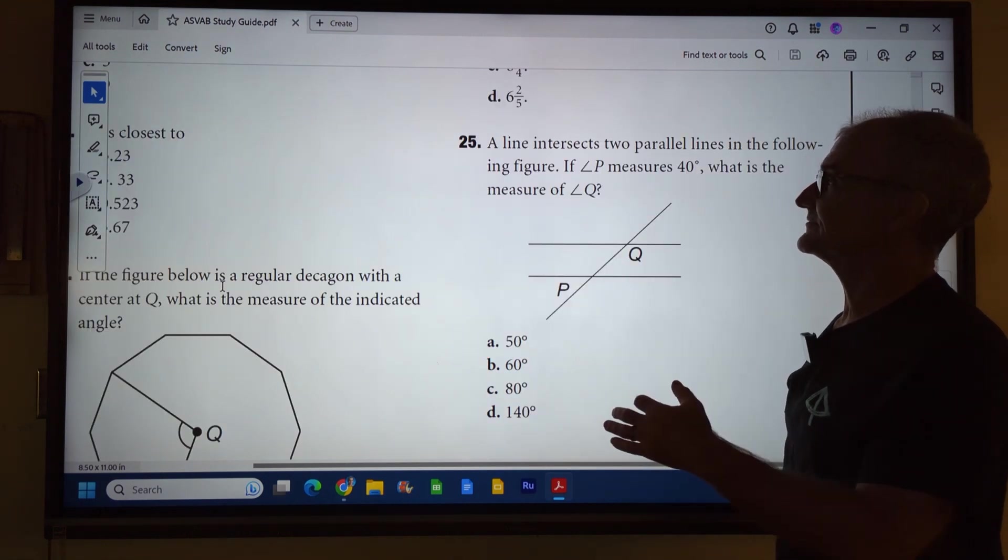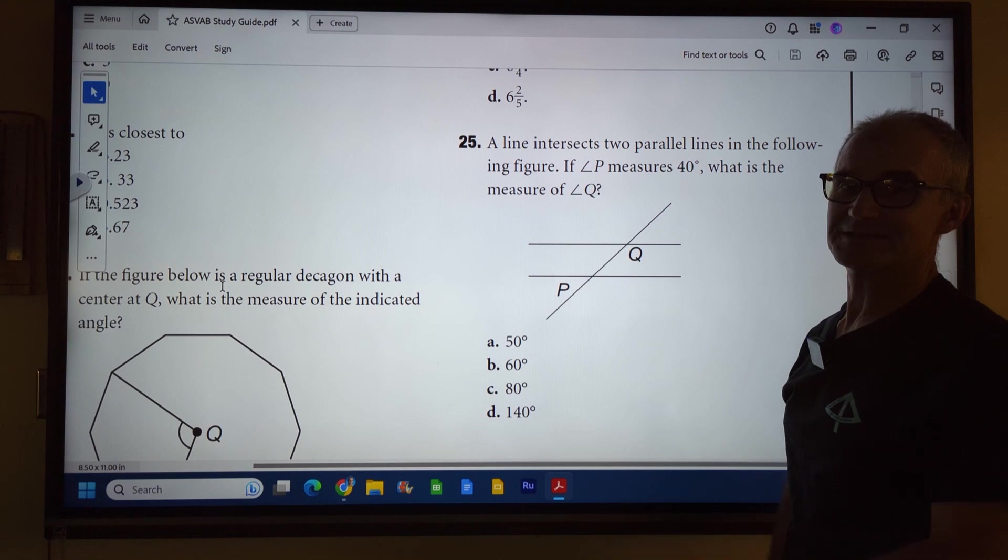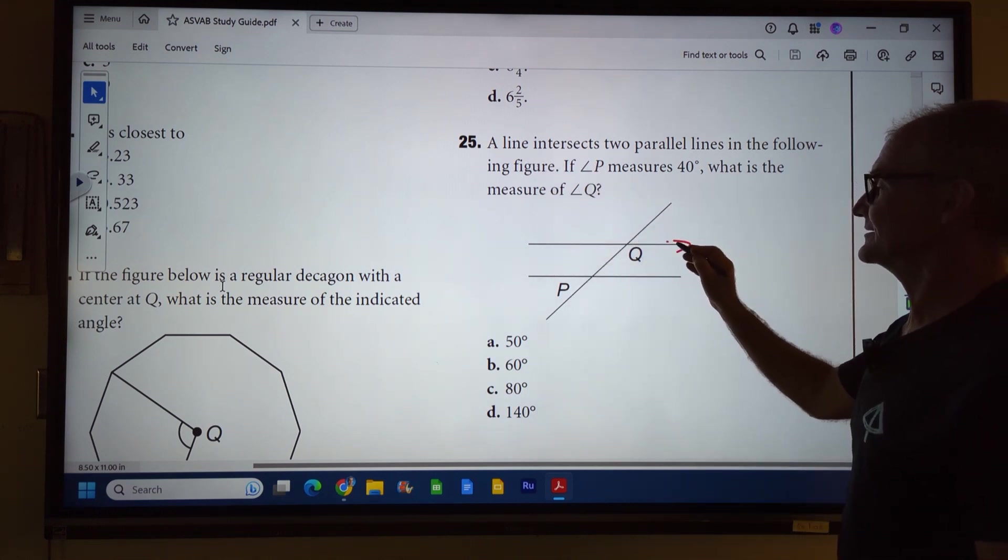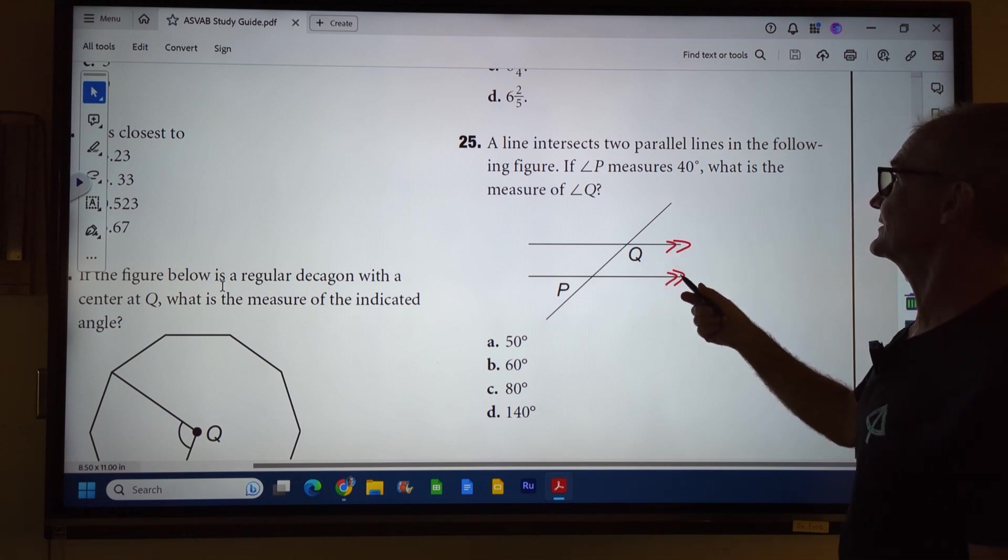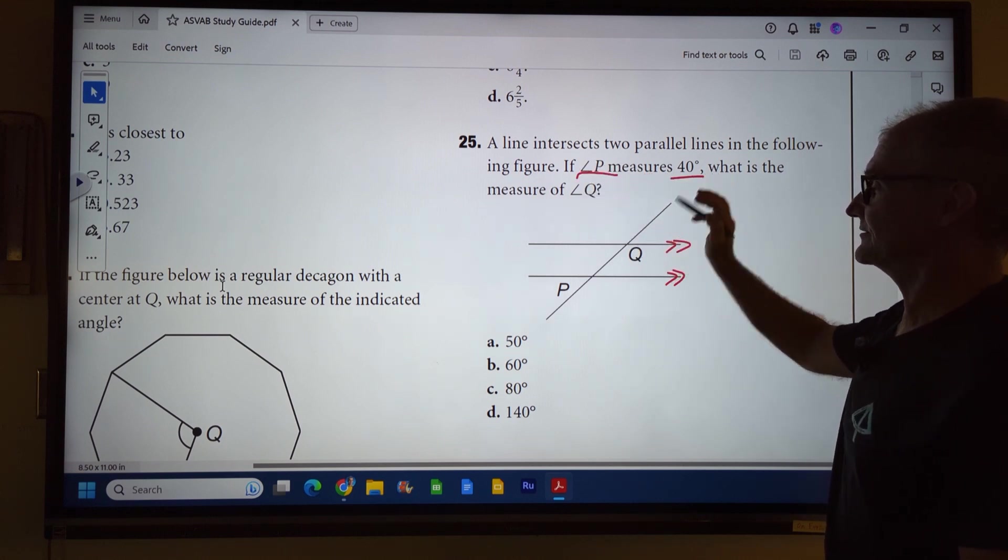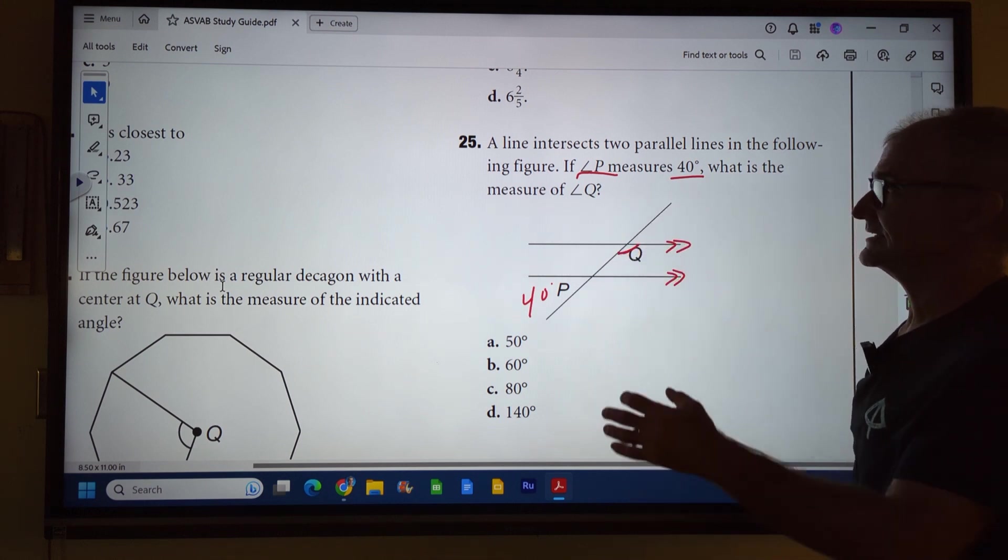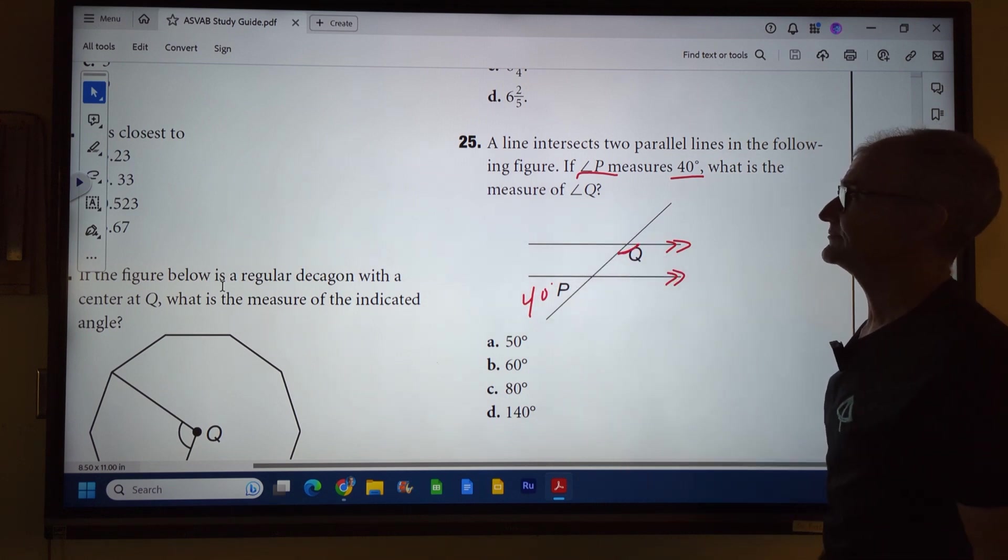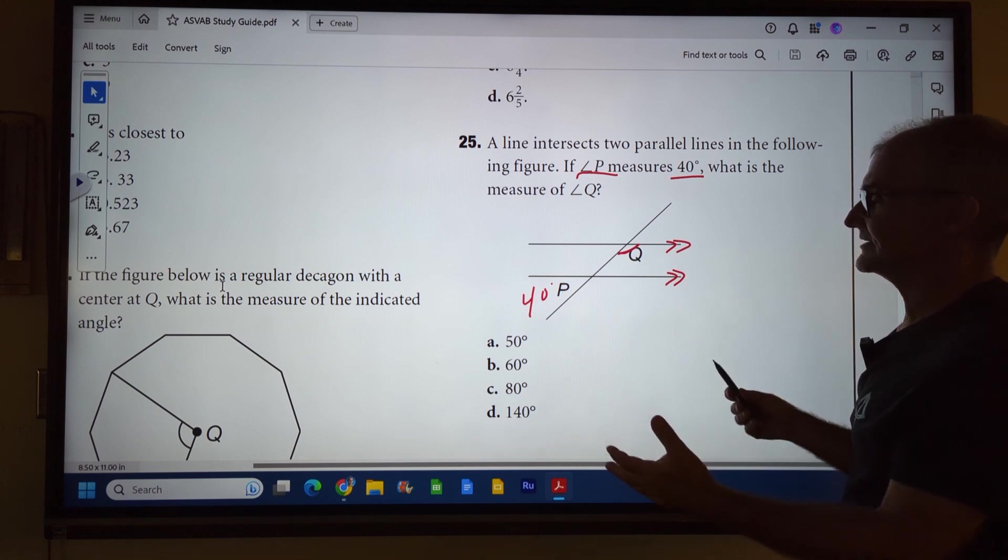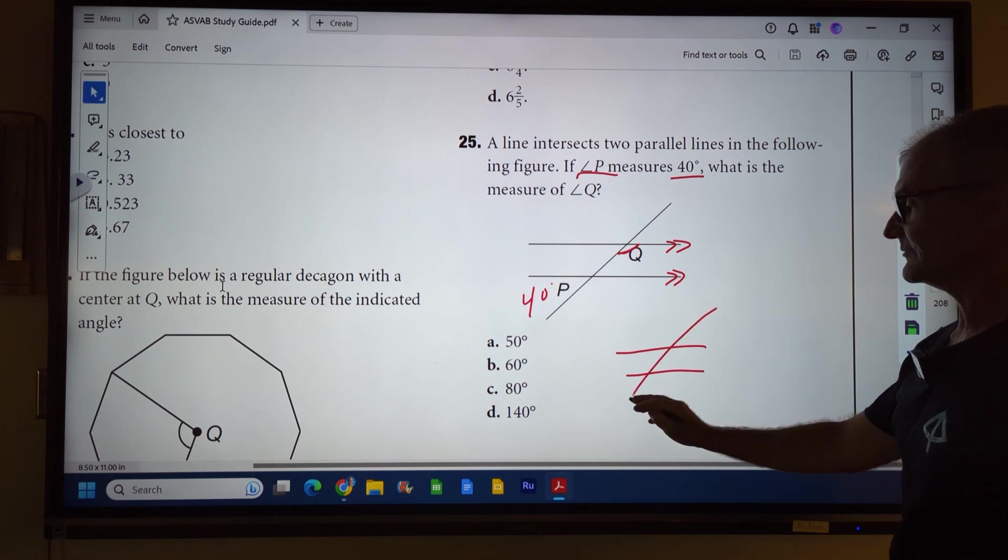All right, last problem, problem number 25. Before I do this problem, make sure you hit that subscribe button and get the notifications as well. It helps me out a lot. A line intersecting two parallel lines. So sometimes you'll see this notation, the double arrows that say they're parallel. And the following figure, if angle P measures 40 degrees, what is the measure of angle Q? So one thing I do is I underline important parts in the problem. Additionally, I transfer the important parts to my diagram, and I see if I can figure it out.